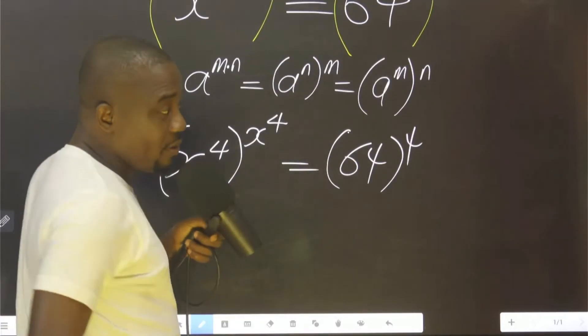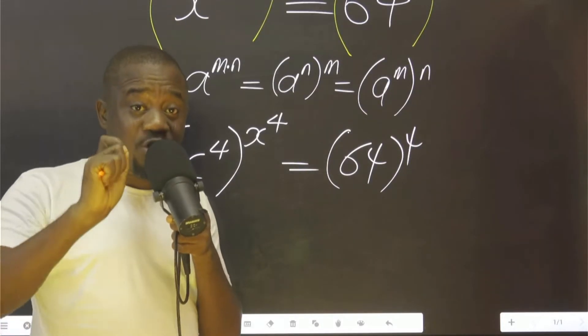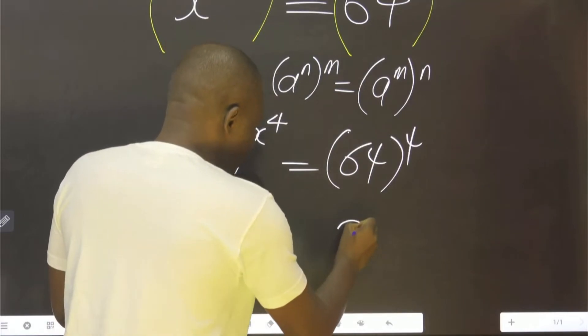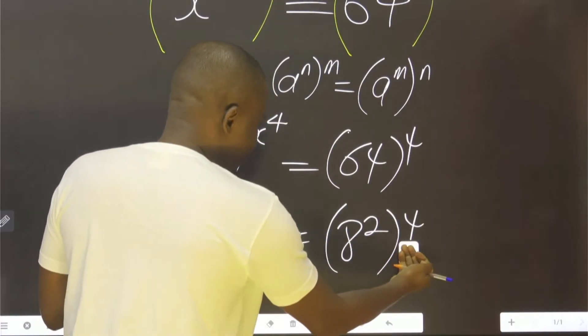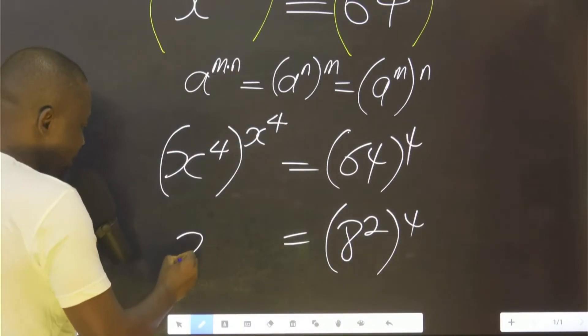What is the meaning of 64? It means 8 raised to power 2. So 8 raised to power 2, put this 4 here, then this remains the same.